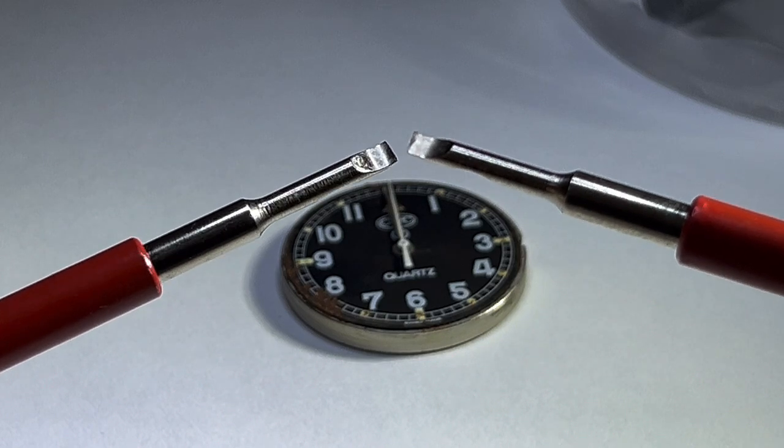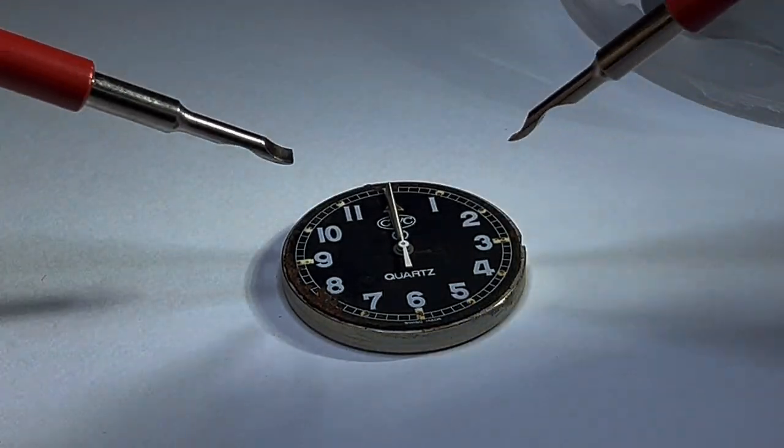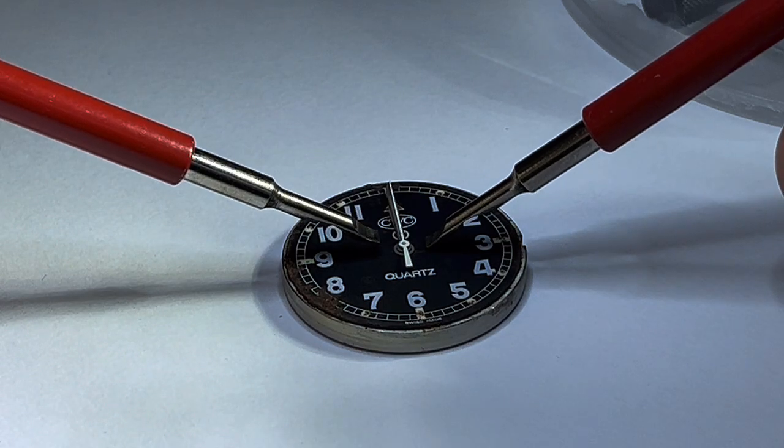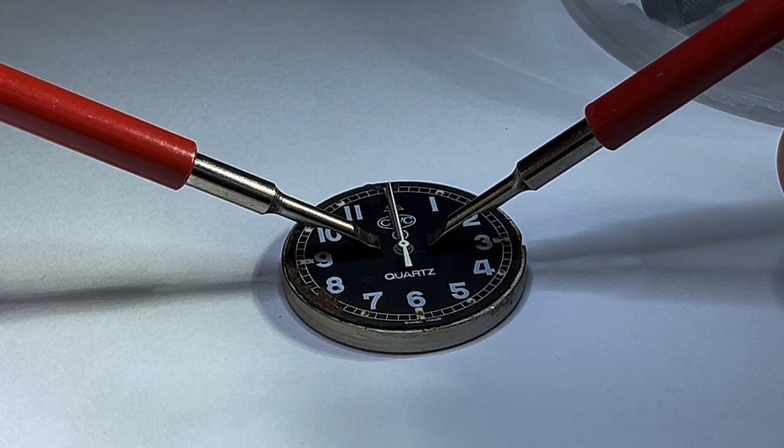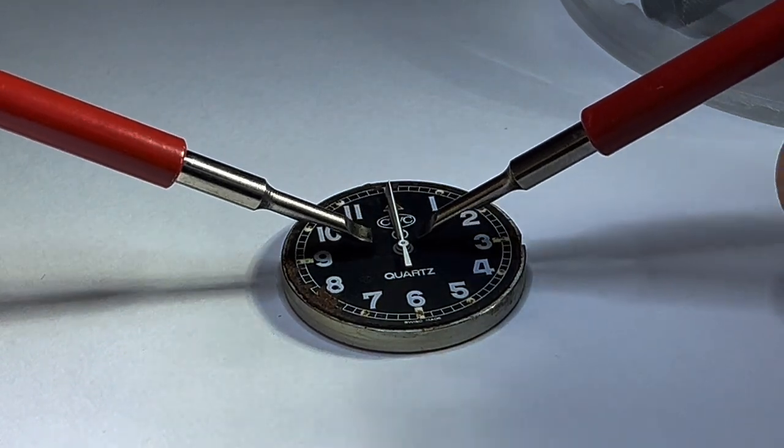You just insert the ends under the hands where they fit onto the movement in the center and then you lever the hands up. Very simple to use and there's nothing in the way so you can see what you're doing.